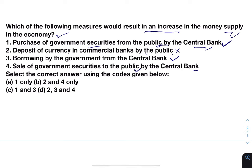Sale of government securities to the public by the central bank — when the central bank sells government securities and the public buys them, the public puts their money into the bank in a way, so there will be less money with the public; this will not increase the money supply. So the answer will be one and three: purchase of government securities from the public by the central bank, and borrowing by the government from the central bank.